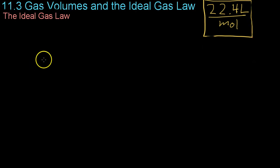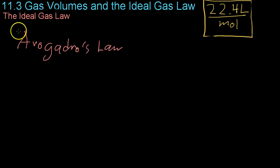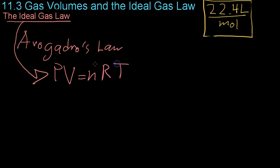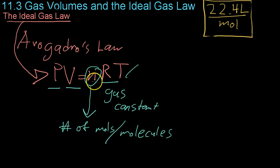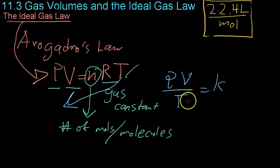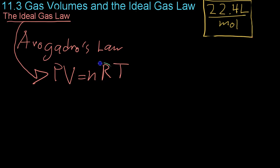Combining all three gas laws from last video with Avogadro's law, we arrive at one of the most important equations in all of chemistry: the Ideal Gas Law, represented by PV = nRT. P is pressure, V is volume, n is the number of moles, R is the gas constant, and T is temperature. If you keep the number of moles constant, this reduces to PV/T = K — the combined gas law from last video.